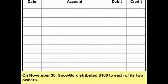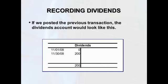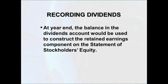Let's look at our dividend transaction. On November 30th, SnowGo distributes $100 to each of its two owners, Bill and Alice. That's a distribution to owners — a dividend — and we record dividends as a debit of $200. They pay it in cash, so we record a reduction in cash of $200. If we posted this transaction, the dividends account would show a beginning balance of zero, $200 added on November 30th, giving an ending balance of $200. At year-end, the balance in the dividends account would be used to construct the retained earnings component on the statement of stockholders' equity.